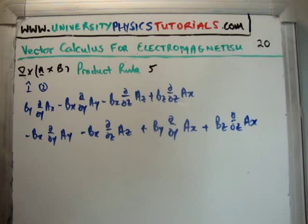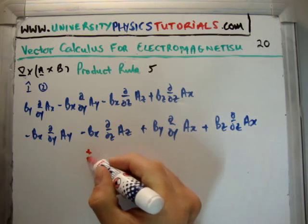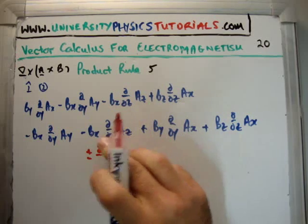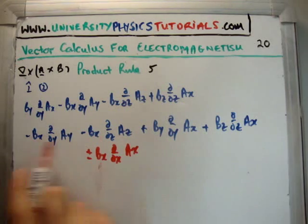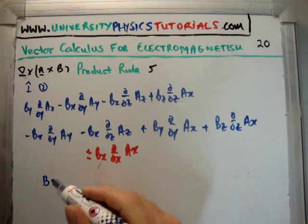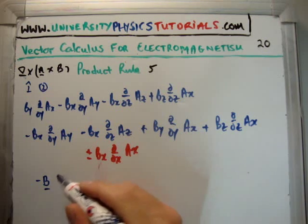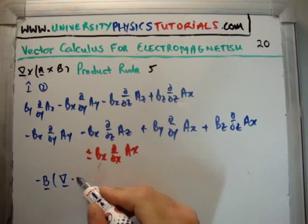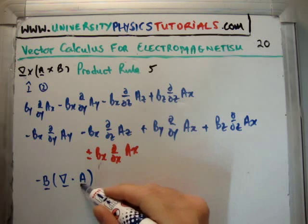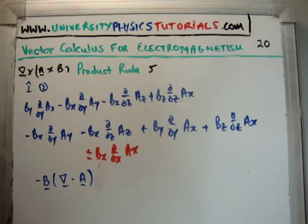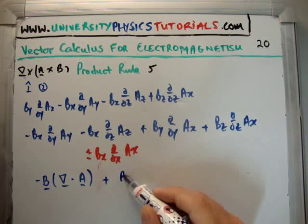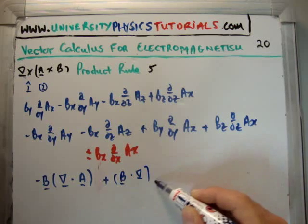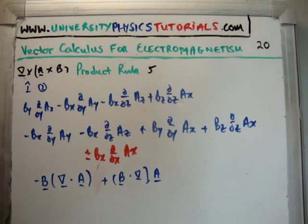We're going to look at this and realize that if we add and subtract b sub x (del/del x)(a sub x), we can complete this term. So what that's going to give us is minus B times the divergence of A in three dimensions. And looking at the other terms after adding in this extra term, for the same reason as earlier, we're going to have (B·∇) multiplied by the vector A.